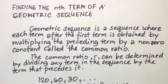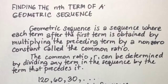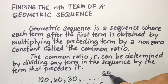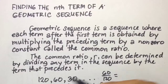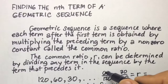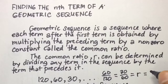For example, given the geometric sequence 120, 60, 30, we can find the common ratio R by dividing the second term by the first term: 60 divided by 120. This is also equal to 30 divided by 60. Both give 1/2, so the common ratio R is equal to 1/2.